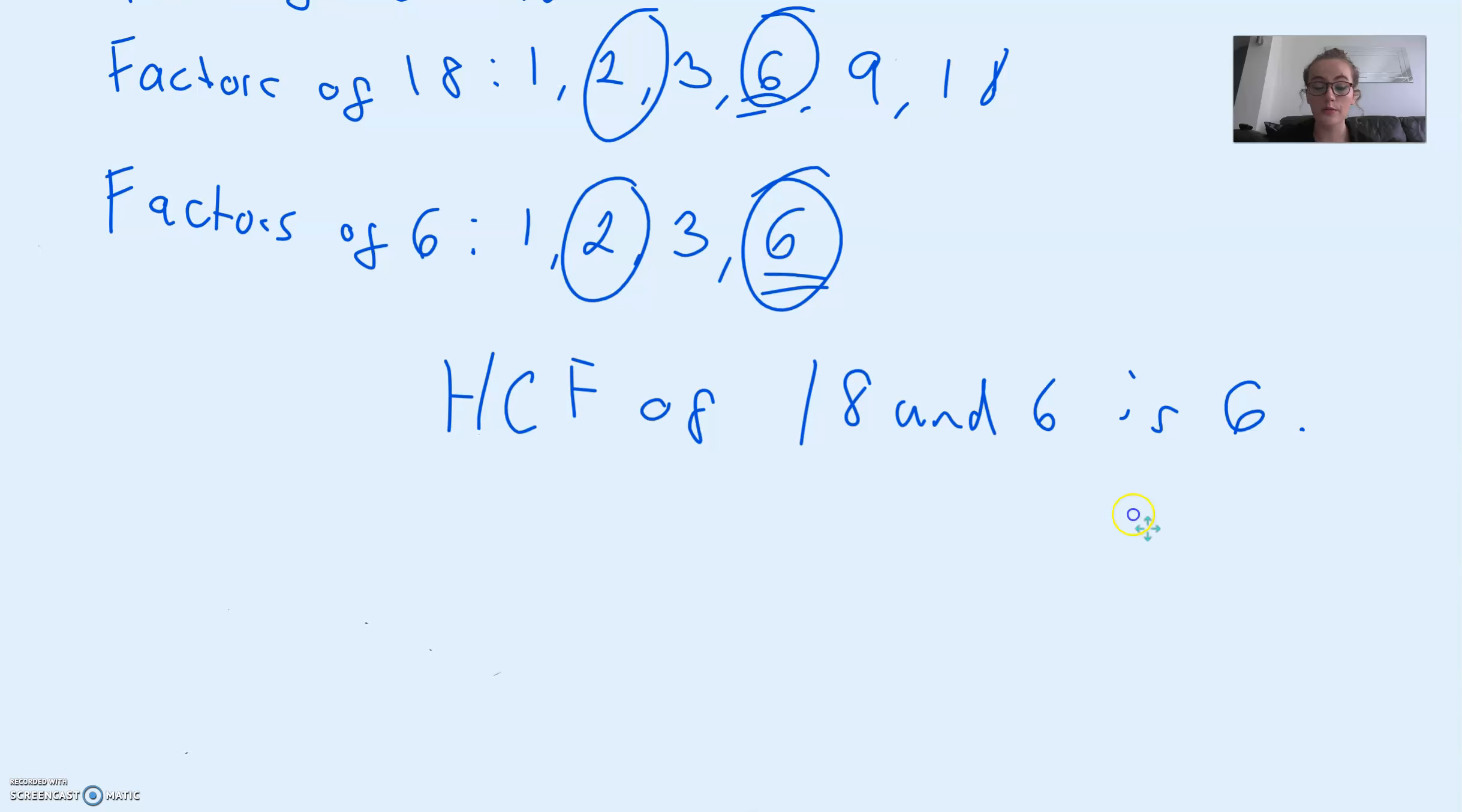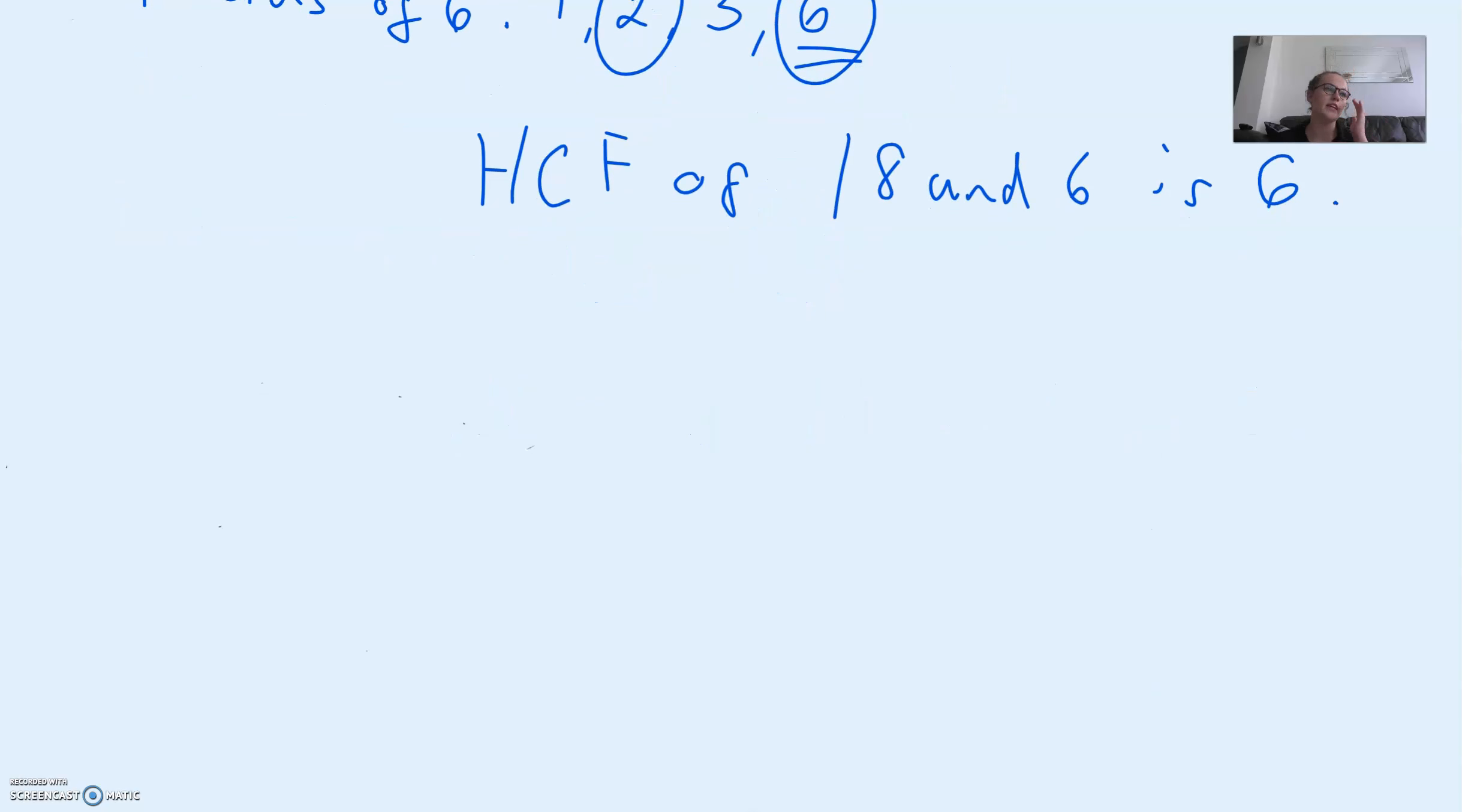The LCM is the lowest common multiple, which means we are looking for a number that would be at least as big as the biggest number of the pair, possibly bigger, and it needs to be divisible by both of the numbers. An easy way of finding a number that is divisible by both of the numbers would be by simply multiplying the numbers. However, that's not always going to be the lowest common multiple.